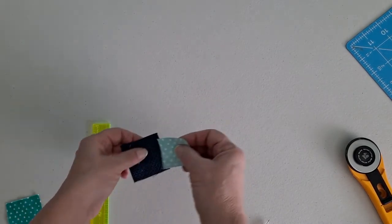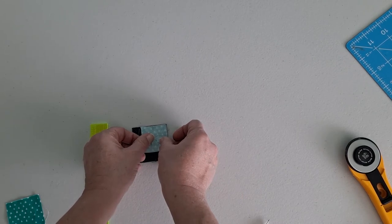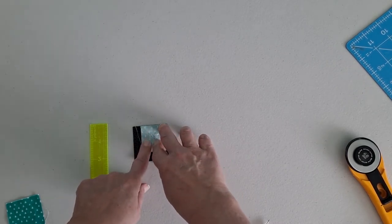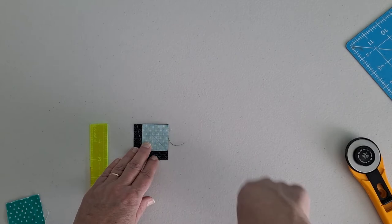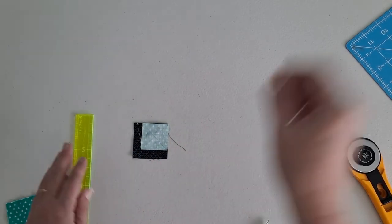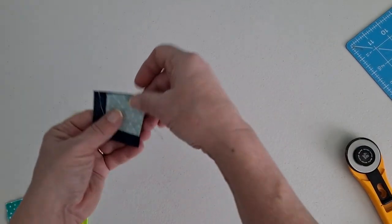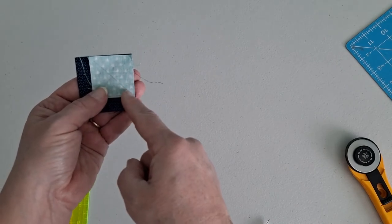And we're going to place that in the corner of our—this will be our background—and we are going to sew on that diagonal line.